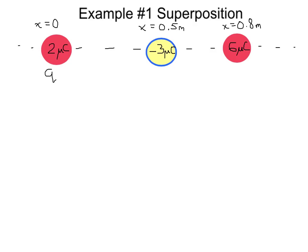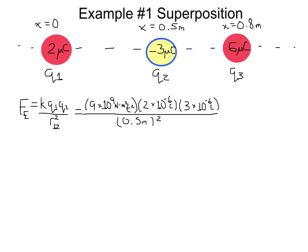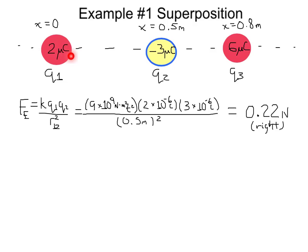Let's denote these charges Q1, Q2, and Q3 for convenience. The electric force between Q1 and Q2 is K — nine times ten to the ninth — times Q1 (two microcoulombs) times Q2 (three microcoulombs), divided by R12 squared, where R12 is 0.5 meters. This gives 0.22 newtons to the right, since this positive charge is attracted to the negative three microcoulomb charge.